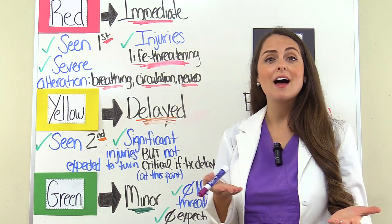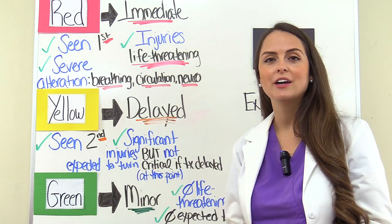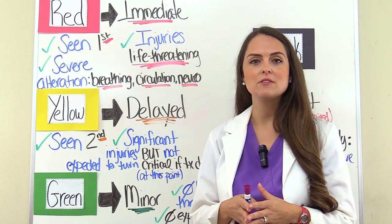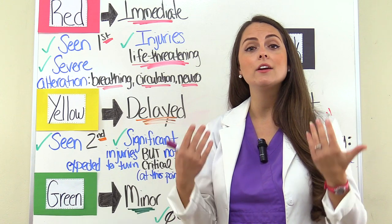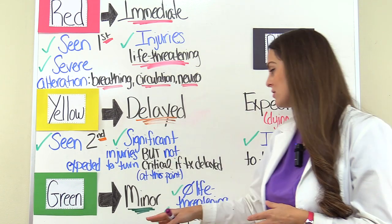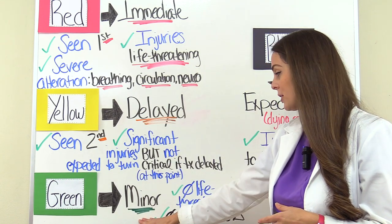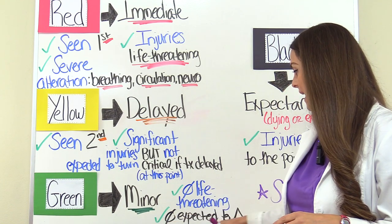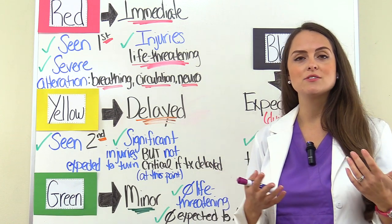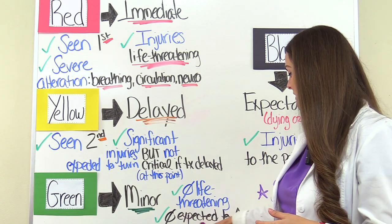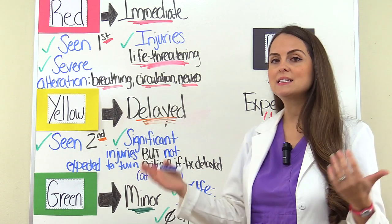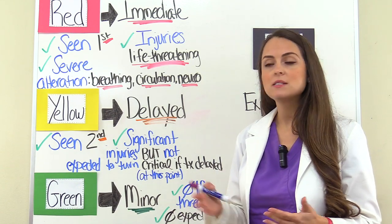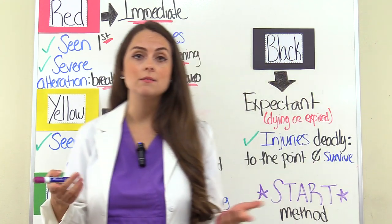The next tag color is green. What do you do when a traffic light turns green? You go. A lot of these patients are termed the walking wounded — they can get up and go. Tagged green means their injuries are considered minor and not life-threatening. Their breathing, circulation, and neuro or mental status is not expected to change, so we can delay treatment for up to several hours. Many of these patients can actually treat themselves.